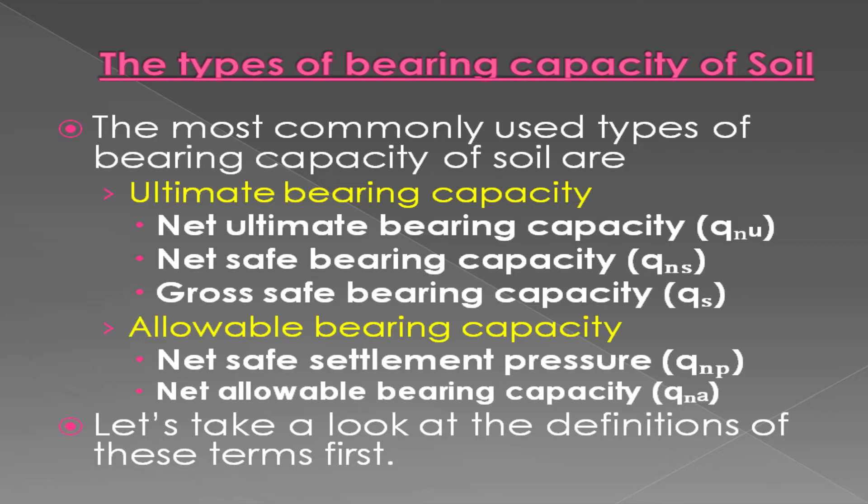The most commonly used types of bearing capacity of soil are: ultimate bearing capacity, net ultimate bearing capacity, net safe bearing capacity, gross safe bearing capacity, allowable bearing capacity, net safe settlement pressure, and net allowable bearing capacity. Let's take a look at the definitions of these terms.